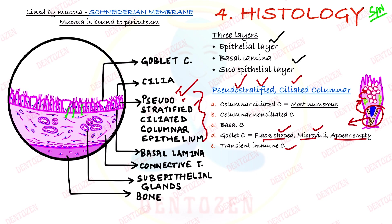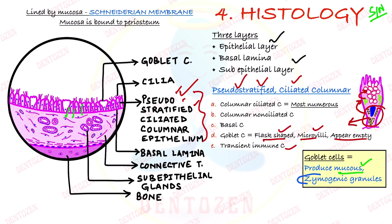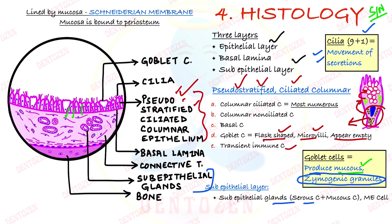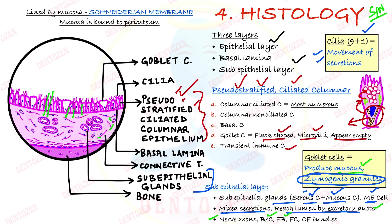The function of goblet cells is formation of mucus, stored in zymogenic granules, which are secreted into the lumen of the sinus by exocytosis. The cilia present on columnar cells have a nine-plus-two arrangement and help move these secretions out of the lumen of the sinus. The sub-epithelial layer contains glands with both serous and mucus cells, as well as myoepithelial cells, giving mixed secretions that reach the lumen via excretory ducts. The surrounding connective tissue contains nerve axons, blood capillaries, fibroblasts, fibrocytes, and collagen fiber bundles.